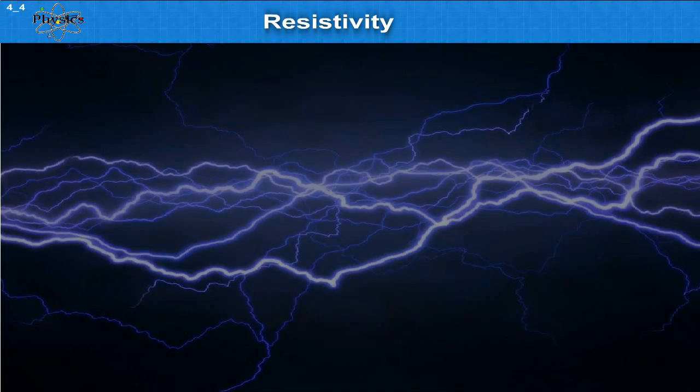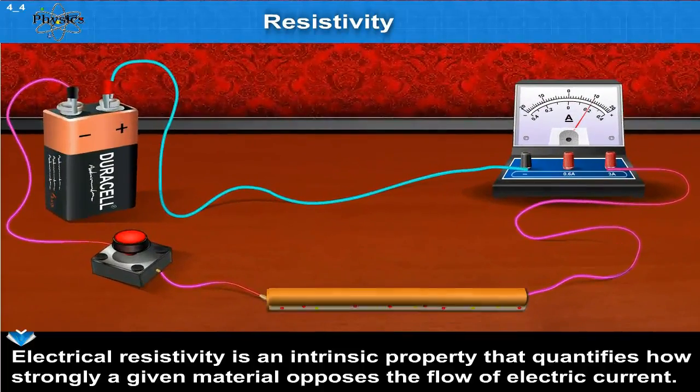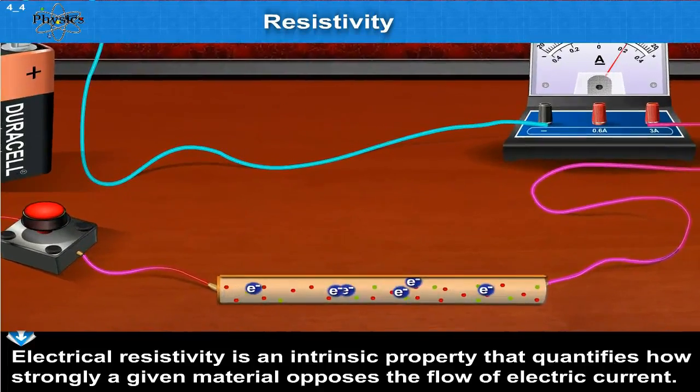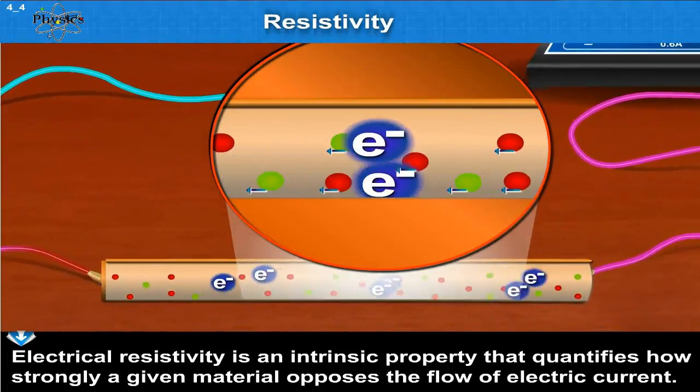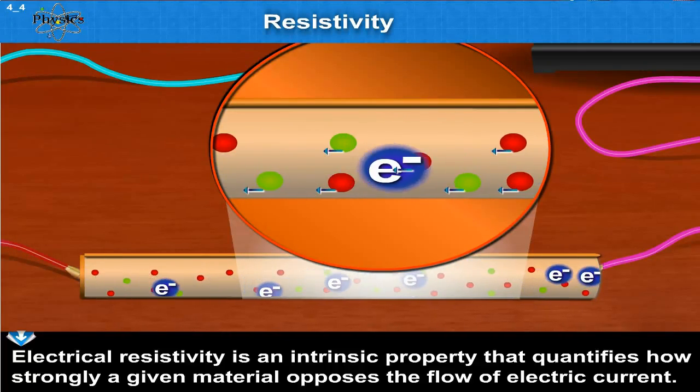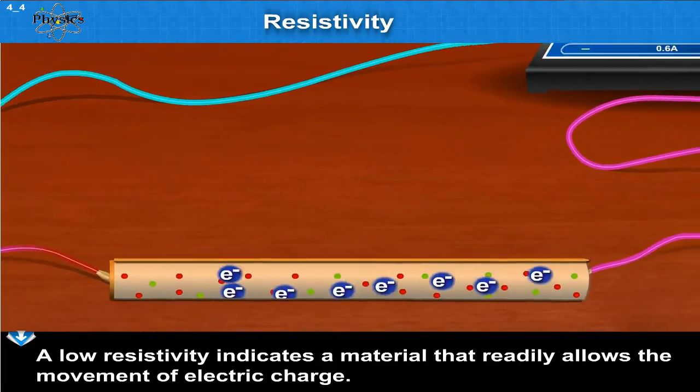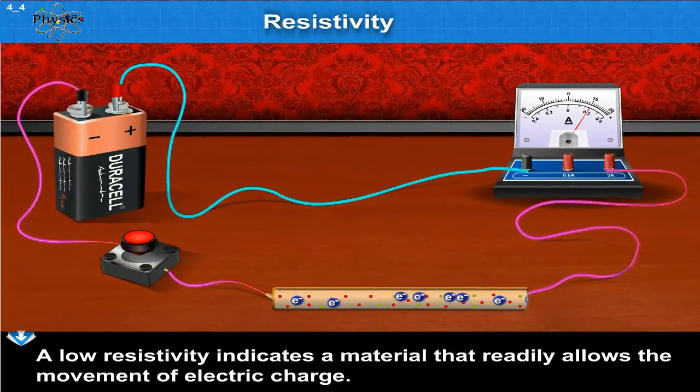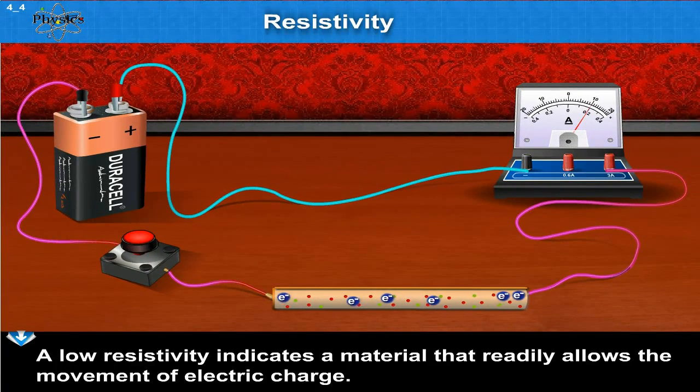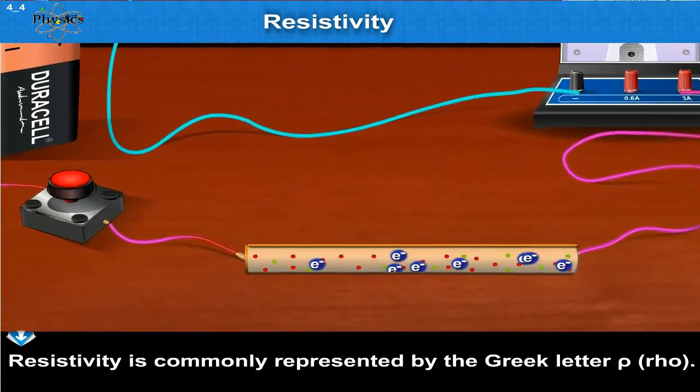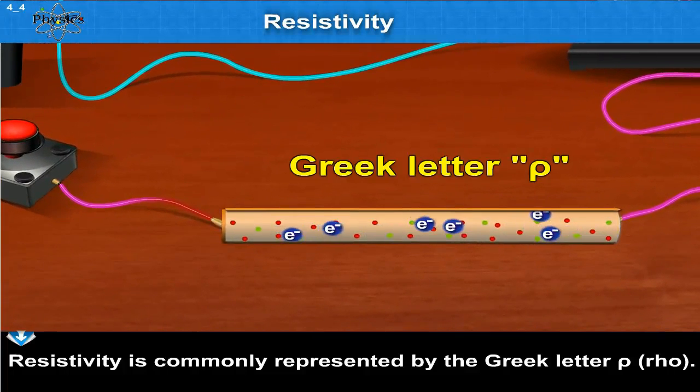Electrical resistivity is an intrinsic property that quantifies how strongly a given material opposes the flow of electric current. A low resistivity indicates a material that readily allows the movement of electric charge. Resistivity is commonly represented by the Greek letter rho.